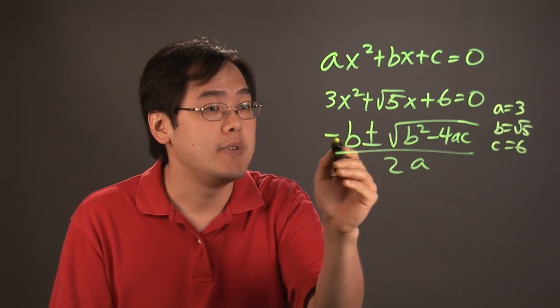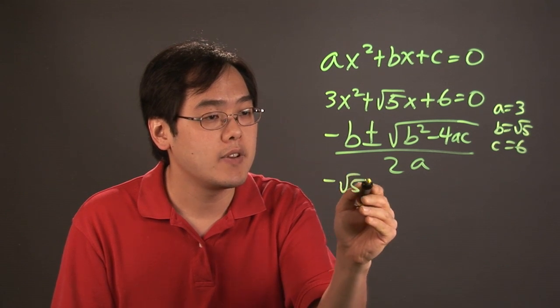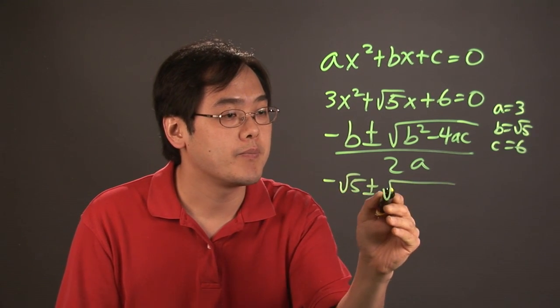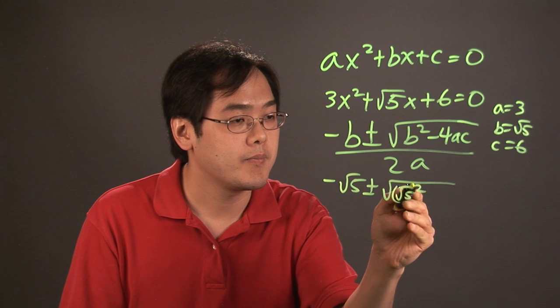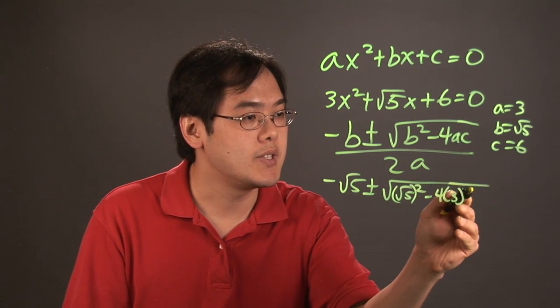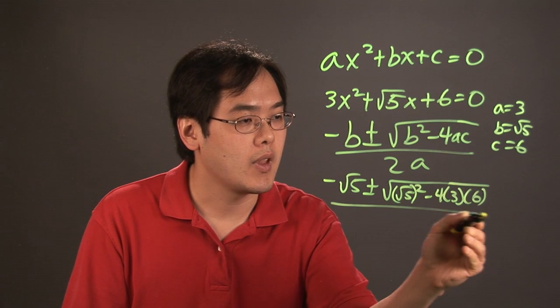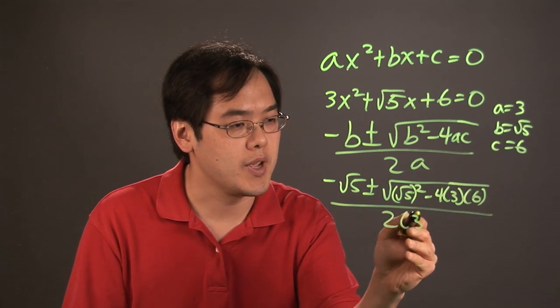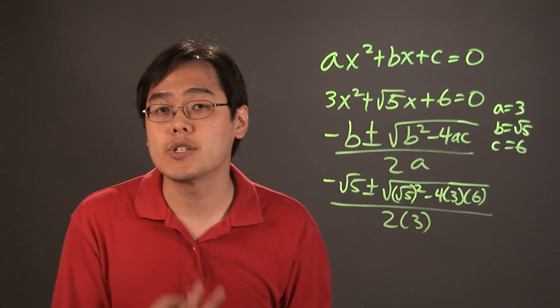So negative b is negative square root of 5 plus or minus square root of square root of 5 squared minus 4 times a is 3, c is 6 over 2 times 3. And what all it is now is just strictly algebra.